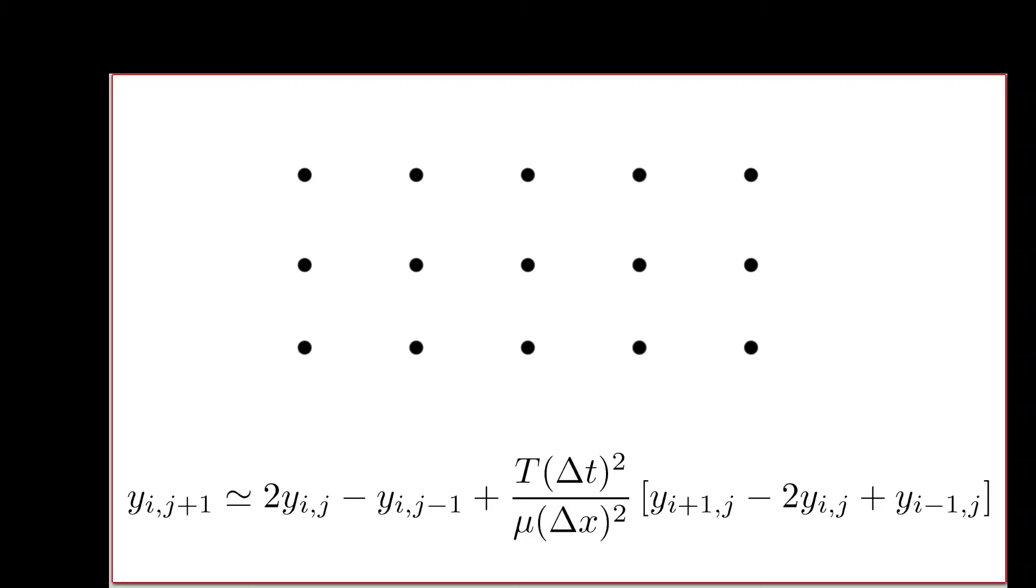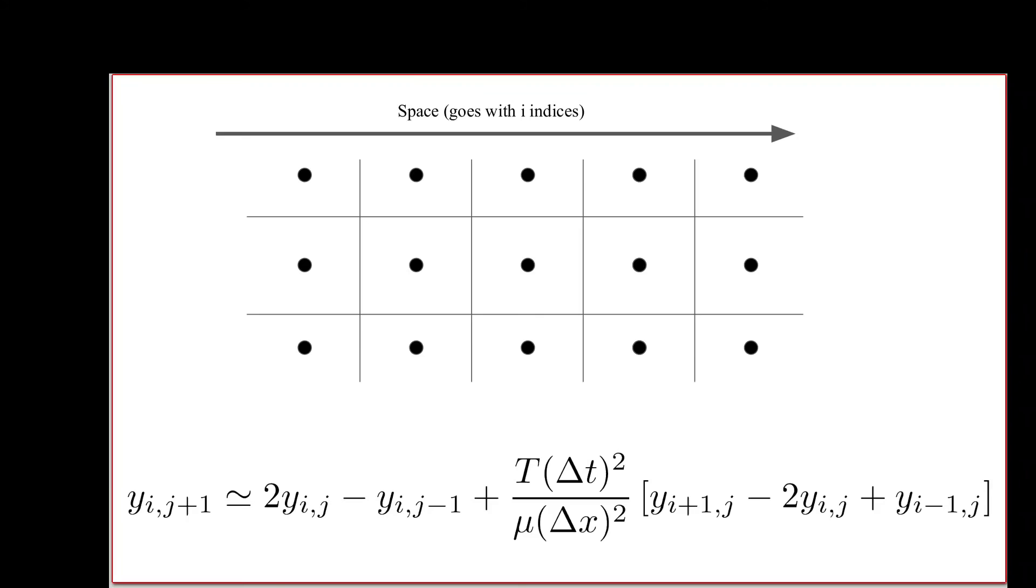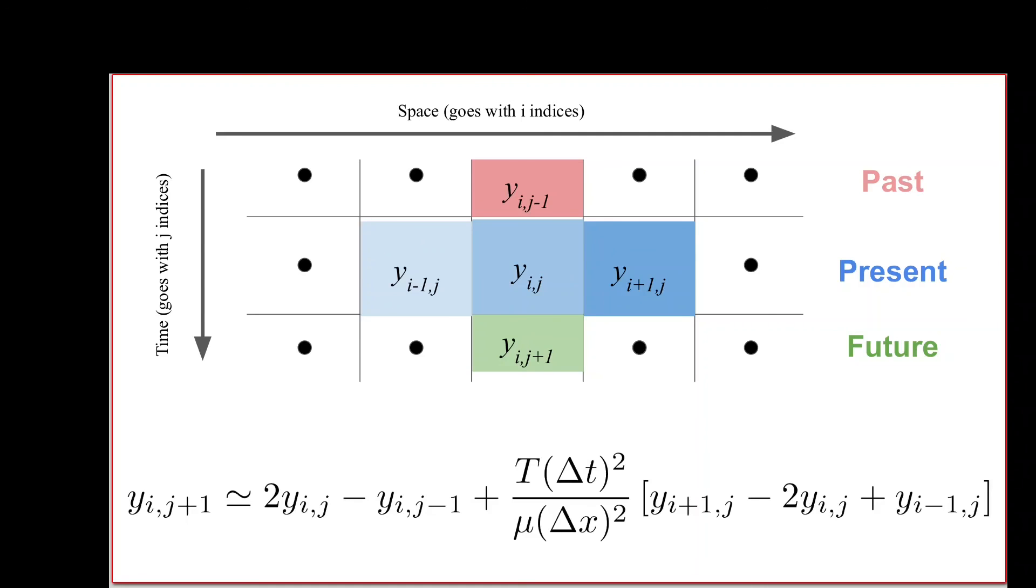We can visualize these if we imagine storing our y information in an array. My array will have three rows and as many columns as I have points on my string. Space goes with the i indices left to right, and time goes with the j indices from top to bottom. We have past on top, present in the middle, and future on the bottom. My middle point that is both present and center is y sub i,j here. I'm using blue to code everything that's in the present, red for the past, and green for the future. We have our left and right terms here, our past term here, our future on the left-hand side because that's where we store our new information.